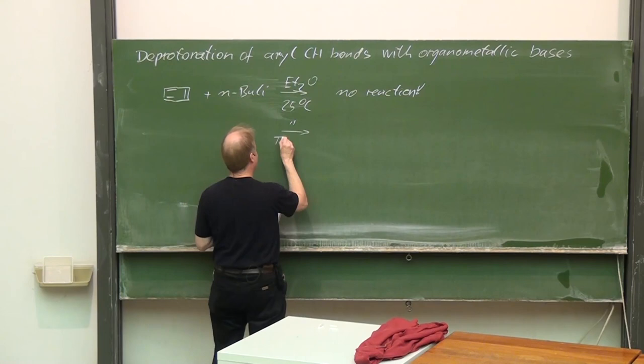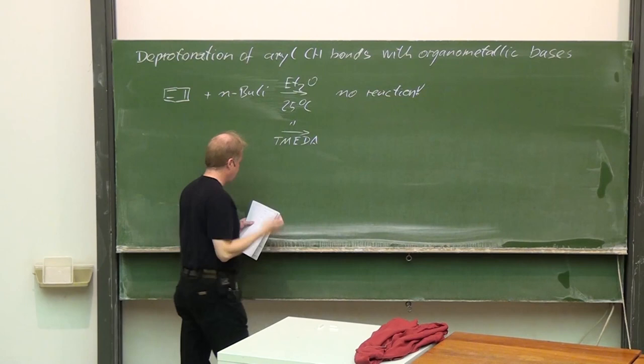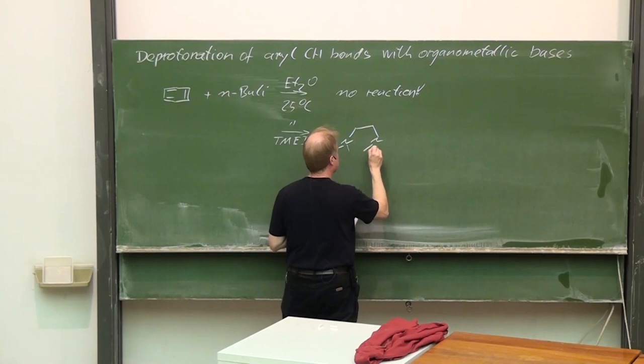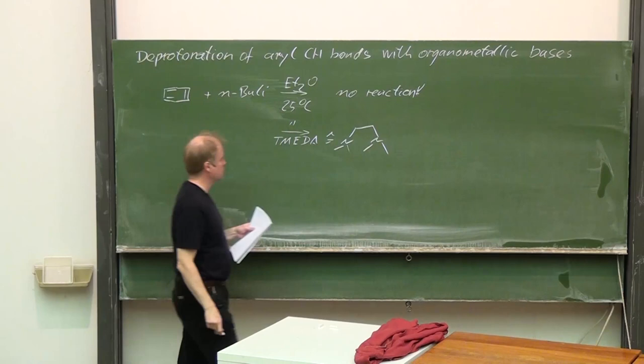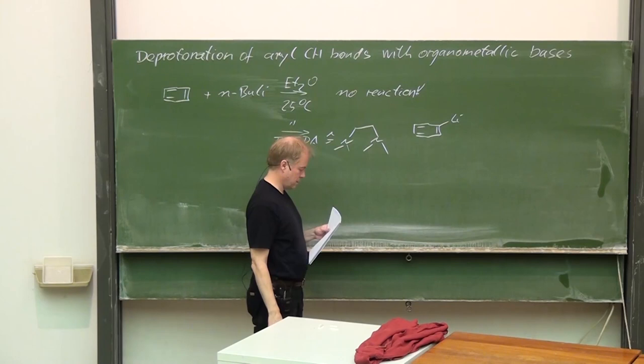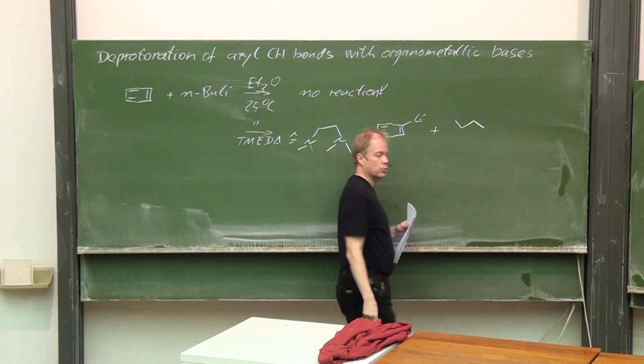Under the same reaction conditions but adding TMEDA — that's tetramethylethylenediamine — it reacts smoothly, giving lithiated benzene plus butane.